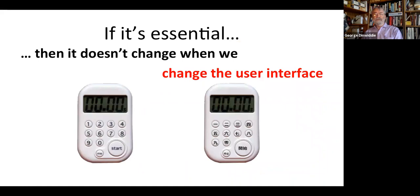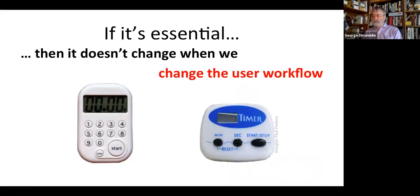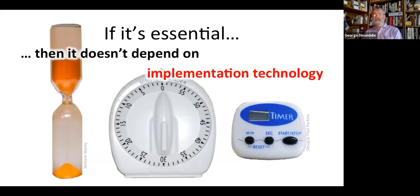Here are some rules. If it's essential, then it doesn't change when we change the user interface. If it's essential, then it doesn't change when we change the user workflow. The precise actions of the user are not part of the essence of a timer. The construction is not part of the essence of a timer — there are lots of different kitchen timers. The important thing is we started with something rather naive based on one idea of what a kitchen timer was, and then we improved it. We took it from a surface-level description of a particular timer to something that described more of the essence of any kitchen timer, and that's a useful technique.